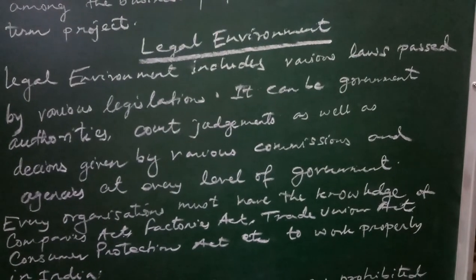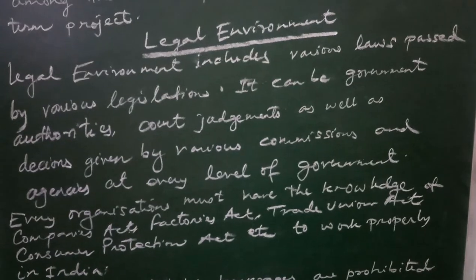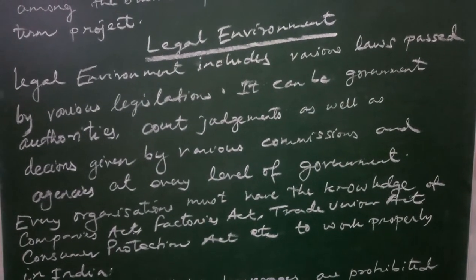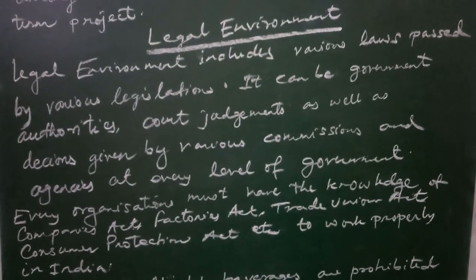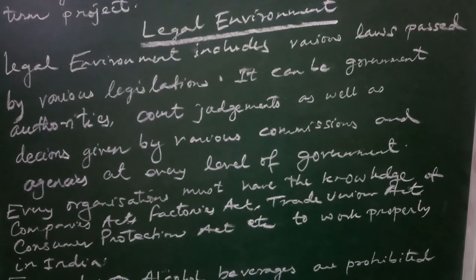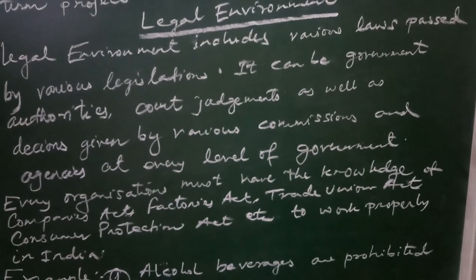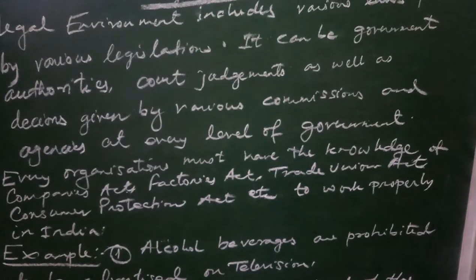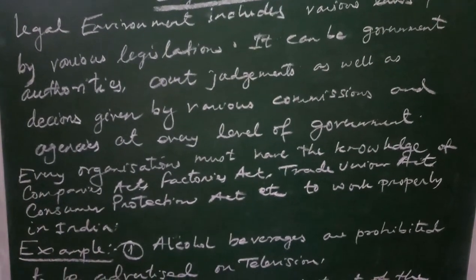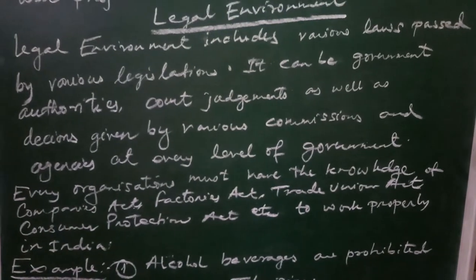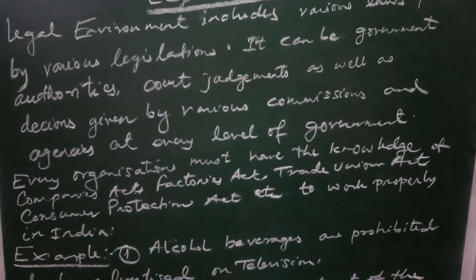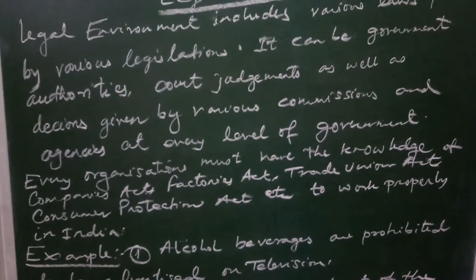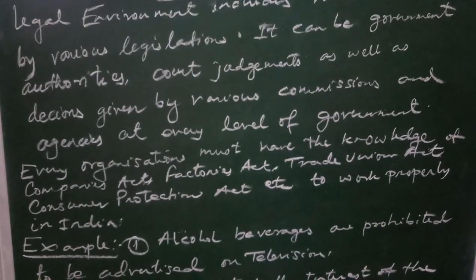Next we have legal environment. Legal environment includes various laws passed by various legislations — it can be government authorities, court judgments, or decisions given by various commissions and agencies at every level of government. Every organization must have knowledge of the Companies Act, the Factories Act, Trade Union Act, Consumer Protection Act, and many more acts so that it can work properly in the country.